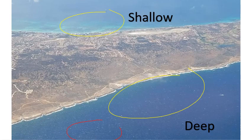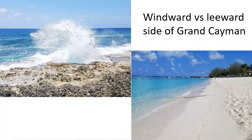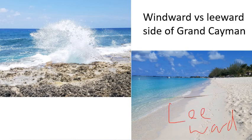You can actually see the difference in the waves — the water looks so much rougher on the windward side than it does on the leeward side, which is very calm because the wind is blowing away. Here's the windward versus leeward side of a different Caribbean island. This is the leeward side — not getting hit by the wind. This is the side that is hit, so it ends up being a lot rougher and more rugged because there's a lot more erosion going on.